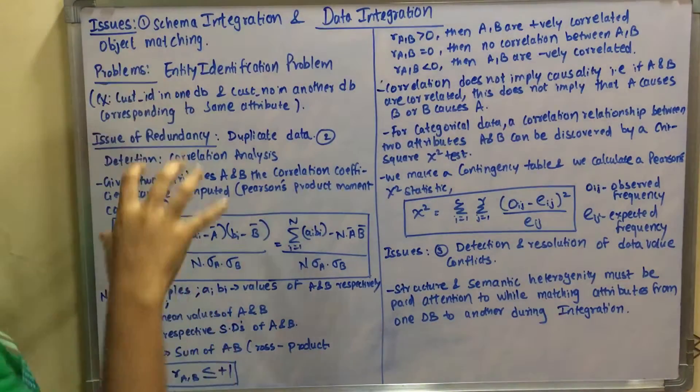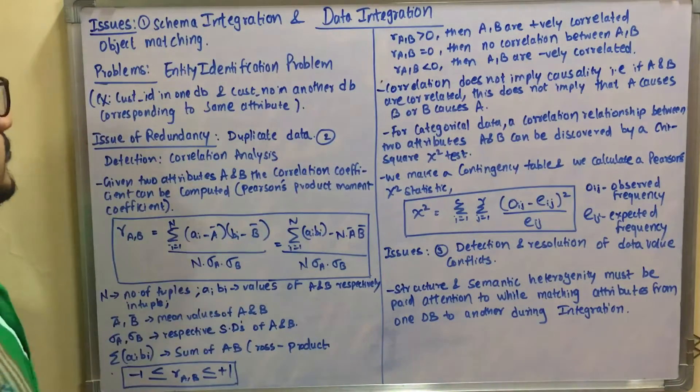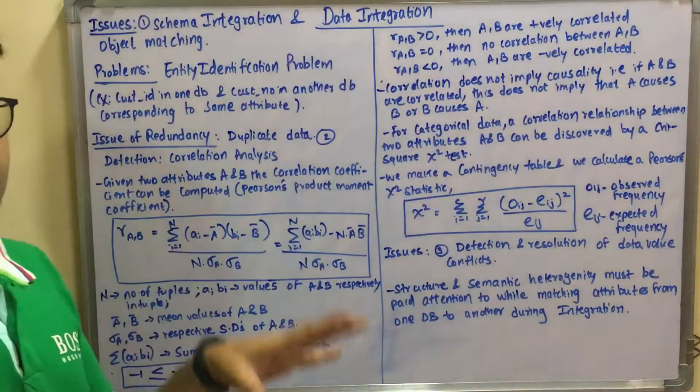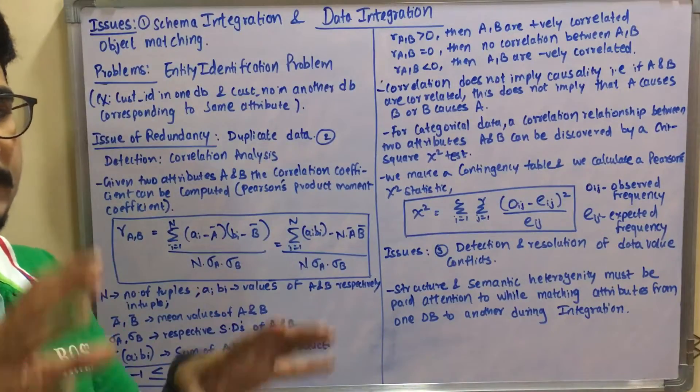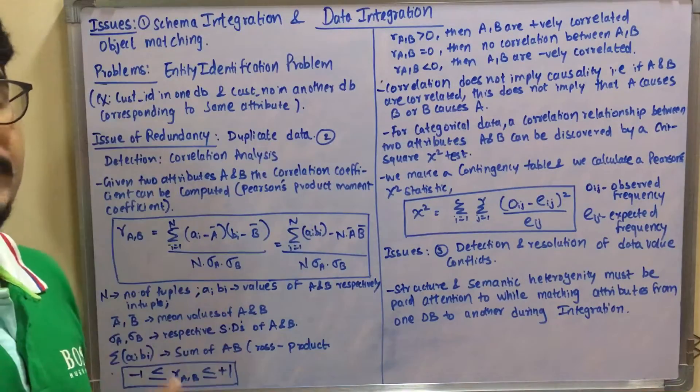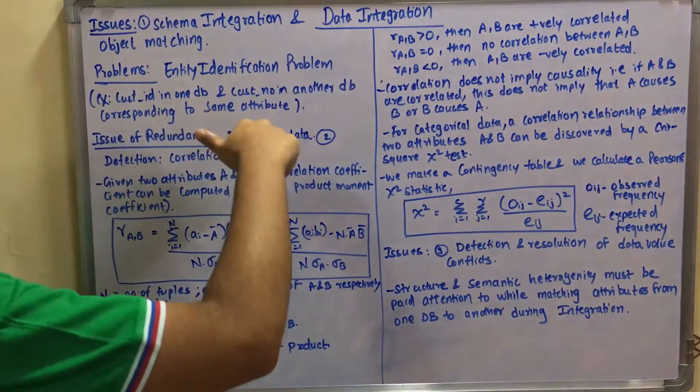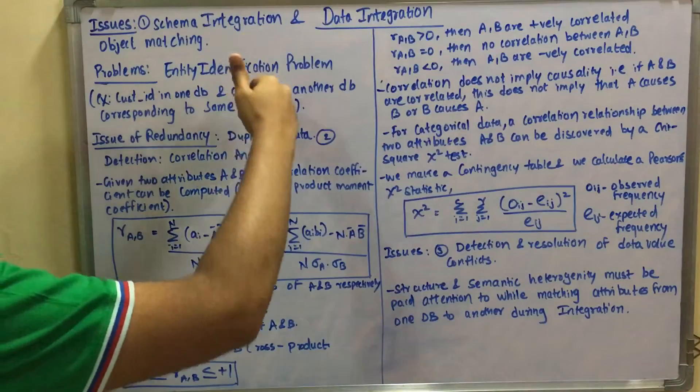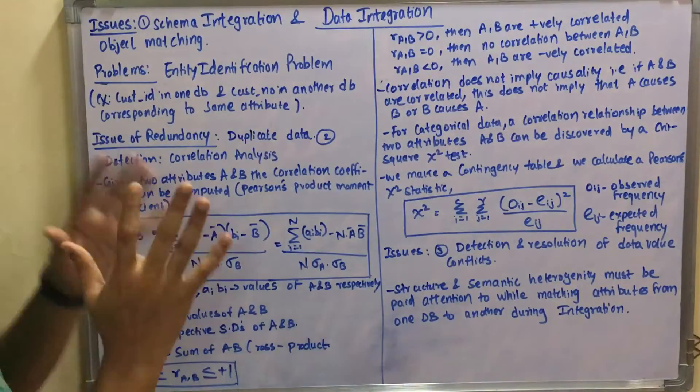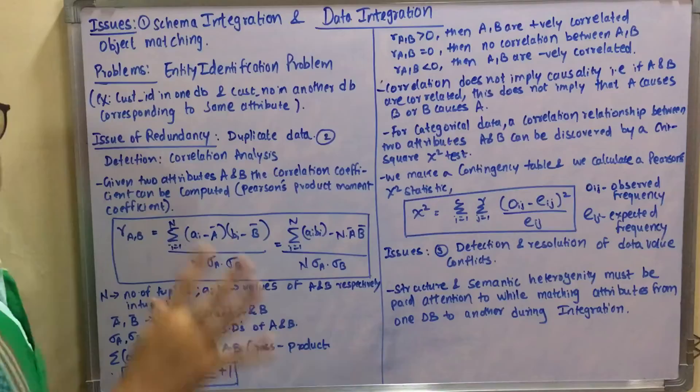You have this entity identification problem (EIP). For example, consider that you have two different tables. In one tuple you have the attribute cust_id in one database, and another database has customer_number. In the real world customer ID and customer number are the same.